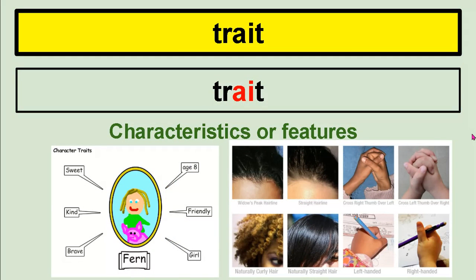Trait — characteristics or features. Sometimes we think of traits as character traits, such as Fern, who is sweet, kind, brave, eight years old, friendly, and a girl. We also have traits which are characteristics or features that we have inherited, such as a pointy widow's peak hairline or a straight hairline. Variation — when you clasp your hands, does your right thumb go over your left, or does your left thumb cross over your right? Naturally curly hair, naturally straight hair, being left-handed or right-handed — what traits did you inherit?